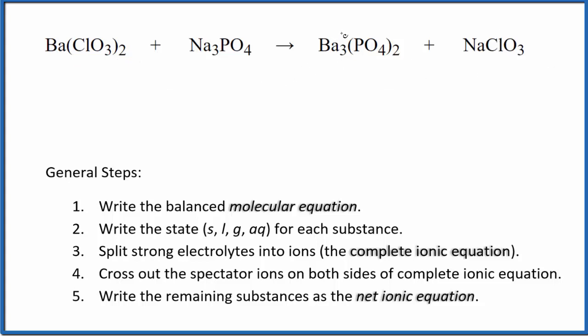Probably easiest to do, we have three bariums here and just one here. Let's put a three in front of the barium chlorate. Now we have three times the two, so we have six of these chlorate ions and only one here. Let's put a six in front of the sodium chlorate.